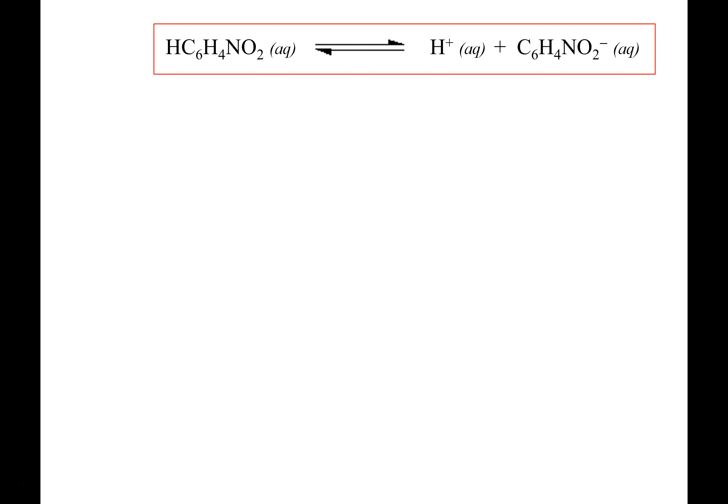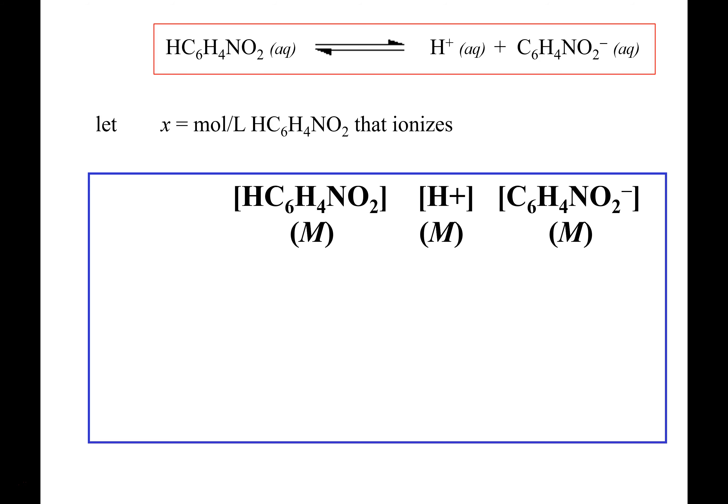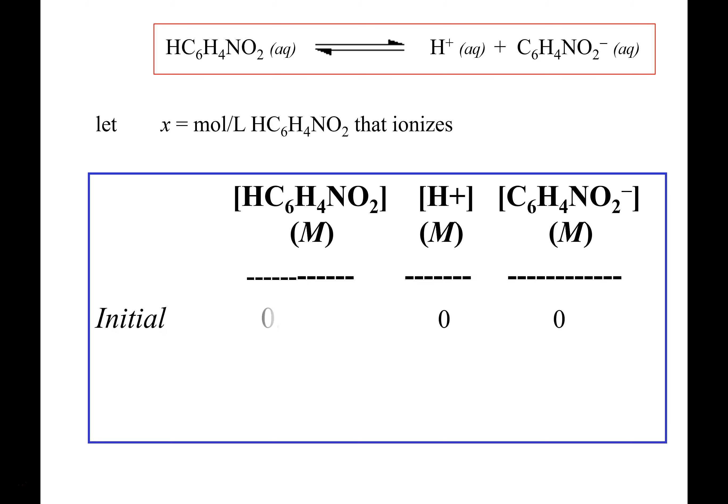I mentioned the ice table — I would really do an ice table. If we set up our ice table, we have a column for our unionized acid, a column for our hydrogen ion, a column for the conjugate base, and then rows for initial, change, and equilibrium. We're going to let X be equal to the moles of the weak acid that ionize.